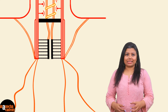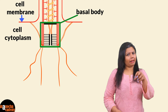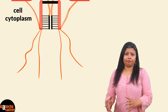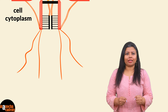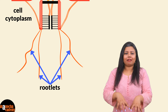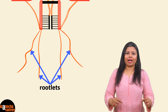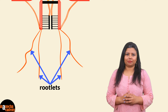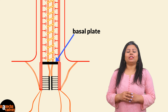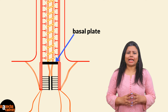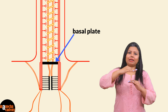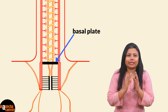The basal body is embedded in the cytoplasm from the cell membrane. Inside the cytoplasm, fibrillar structures called rootlets anchor into the cytoplasm and provide support and anchorage to the entire flagella. The basal plate is present just above the basal body, towards the exterior of the cell. So we have rootlets, then the basal body, then the basal plate.